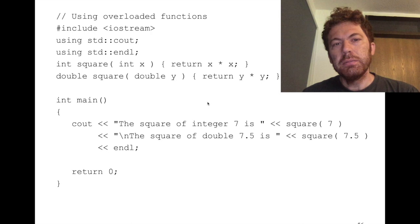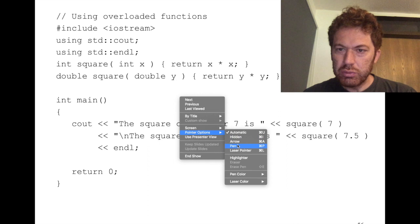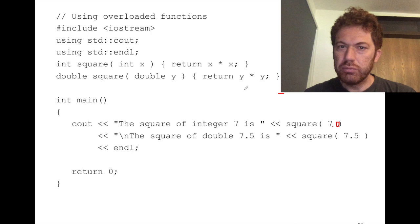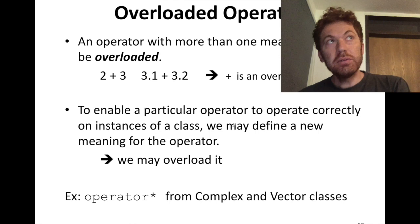In execution, since I am providing an integer to the square function, the integer version will get executed. Here the double version will get executed. If I used 7.0 here, again the double version would get executed because 7.0 is not an integer. So that is that — nothing special there. Now the special part, the new part for C++, is operator overloading.